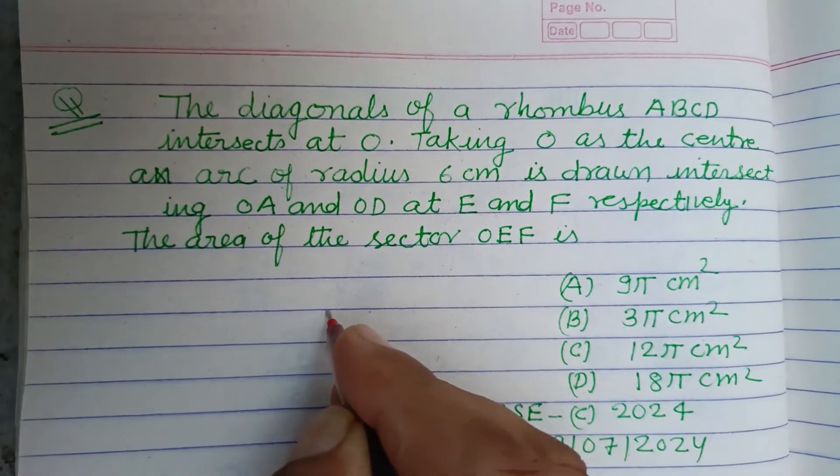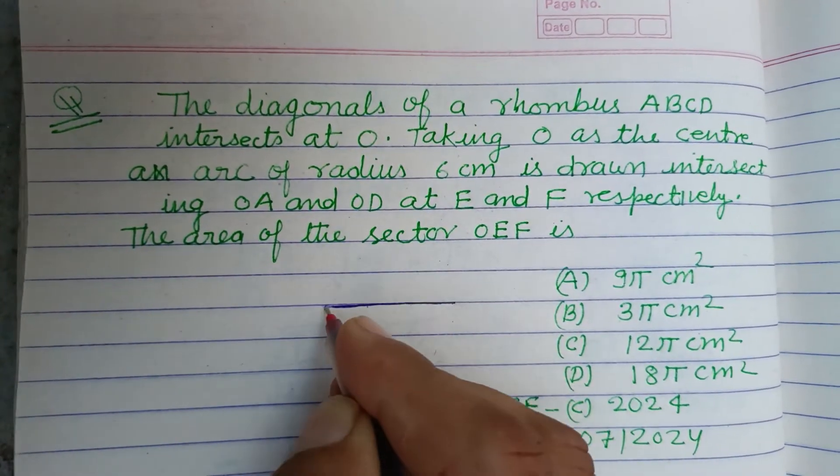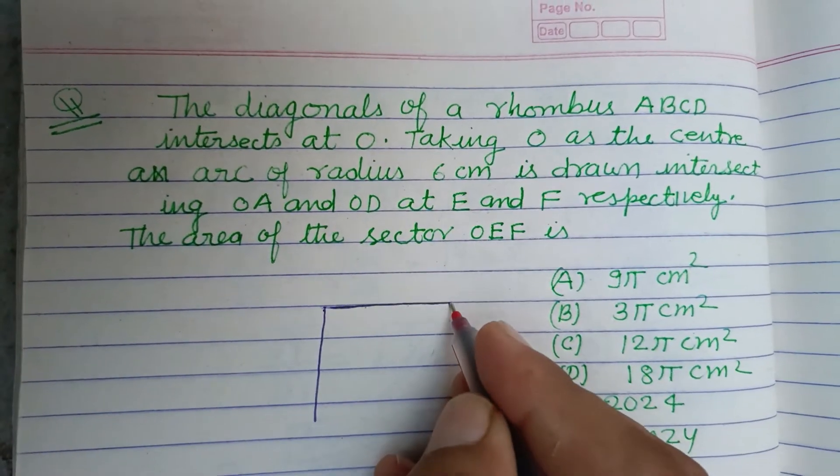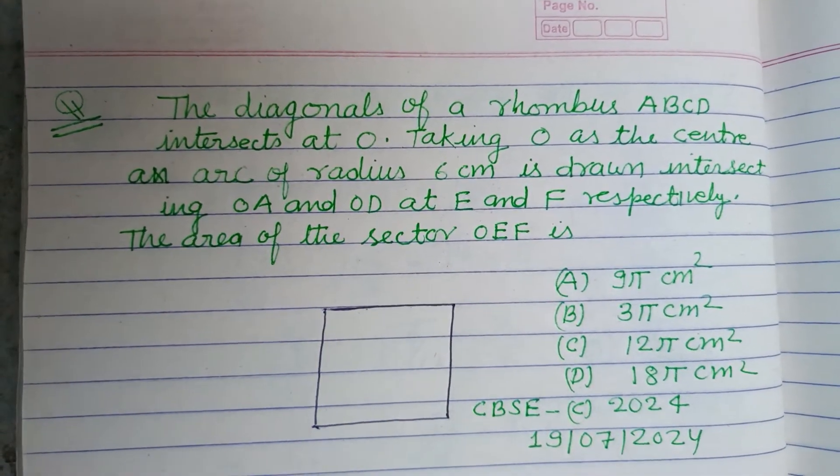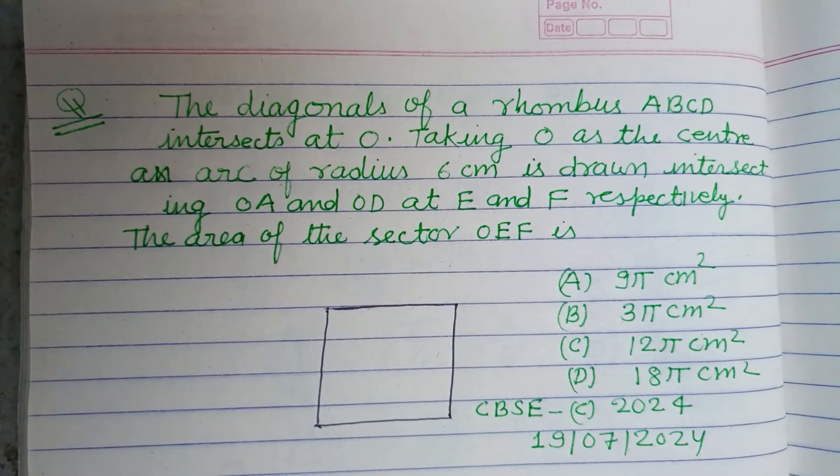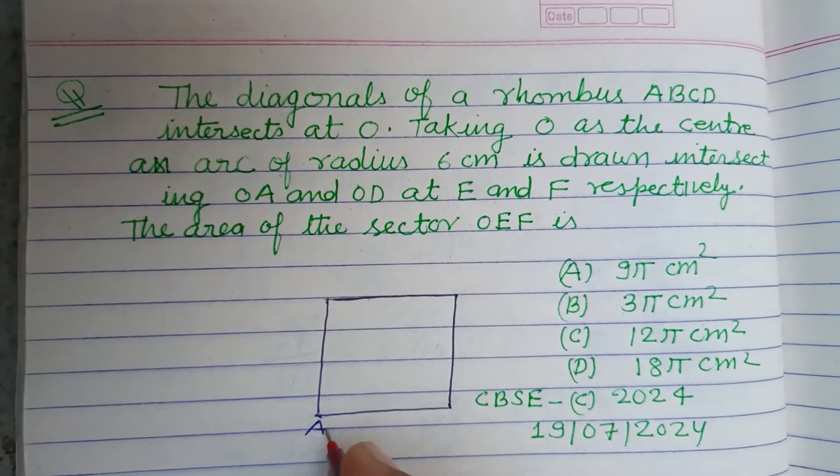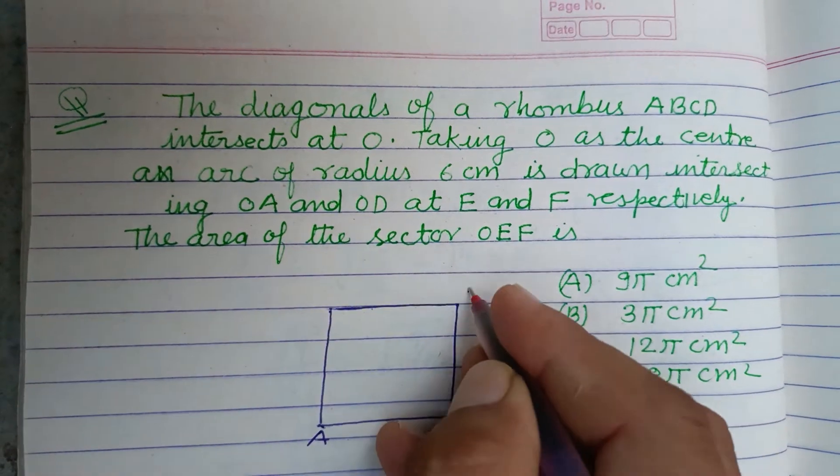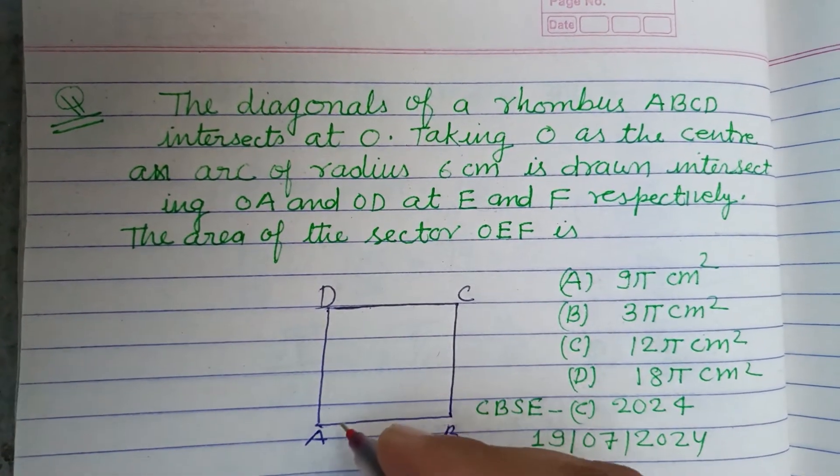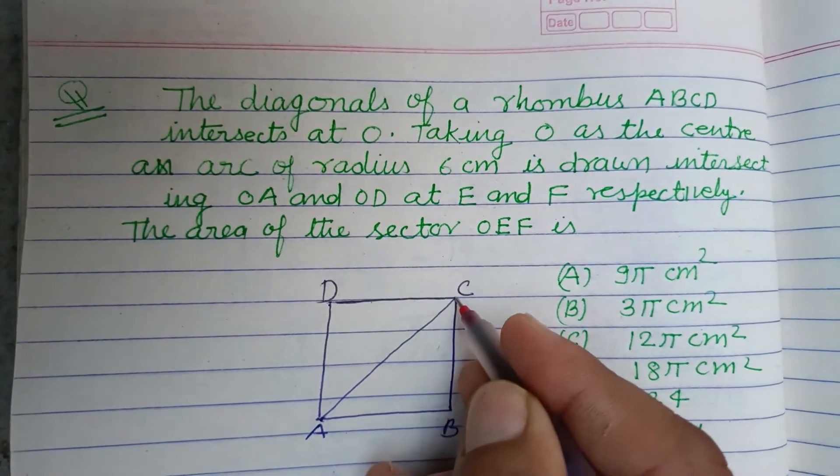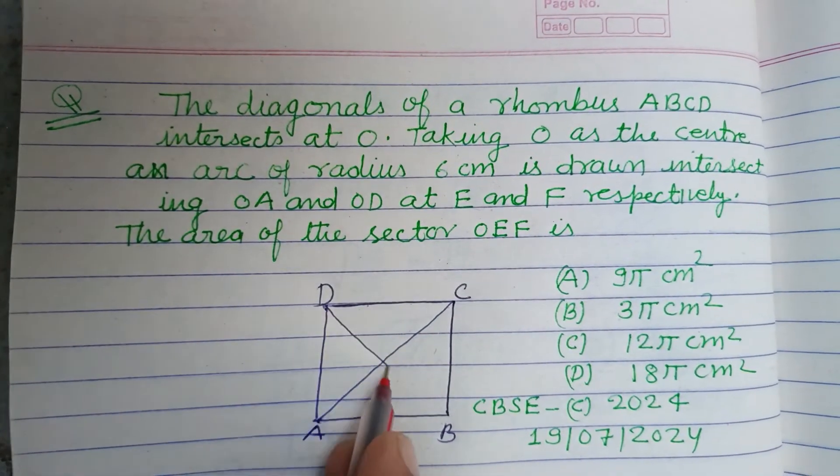So here is a rhombus. A rhombus is a shape whose all sides are equal and it has the property of a parallelogram. This is ABCD, and the diagonals intersect at O, so AC and BD intersect at O.